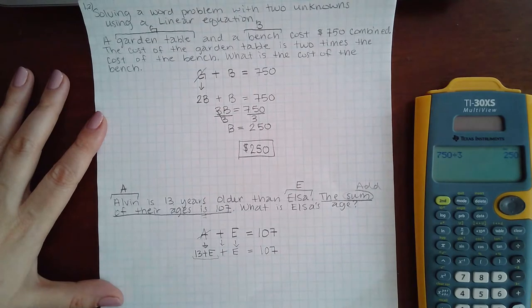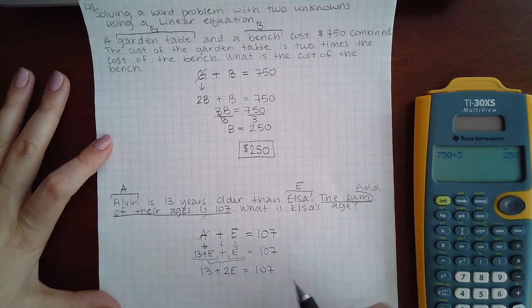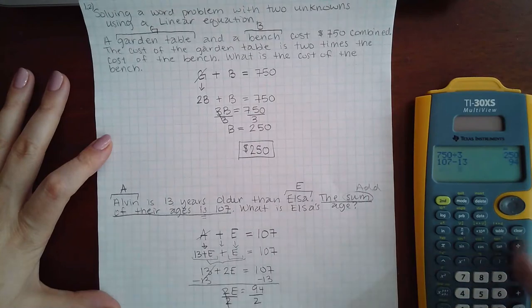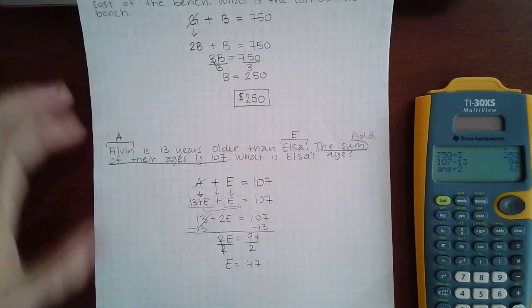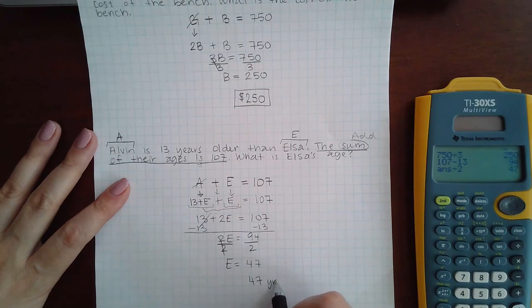If I combine my like terms I actually have 13 plus 2E equal to 107. Then if I start to solve for E I end up with 47. The question says what is Elsa's age, and so since I ended up with E equal to 47, I know that Elsa is 47 years old.